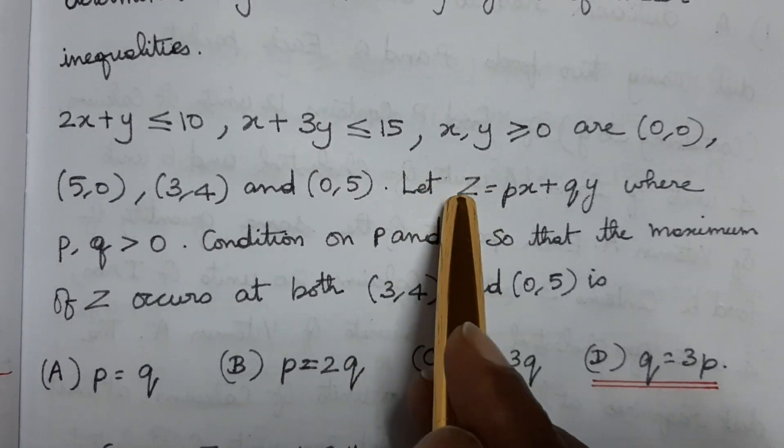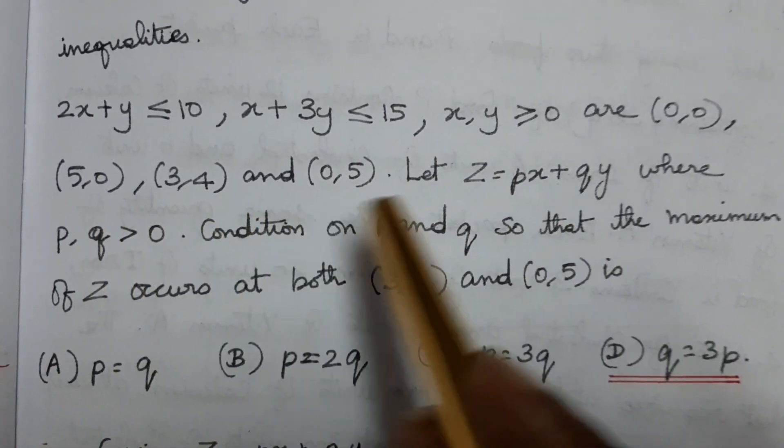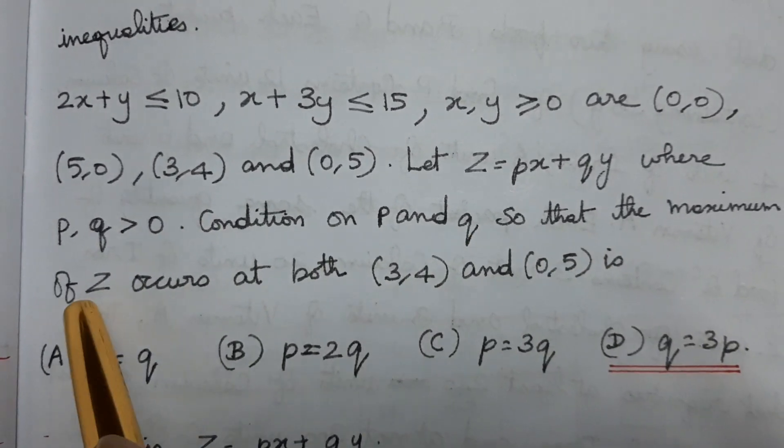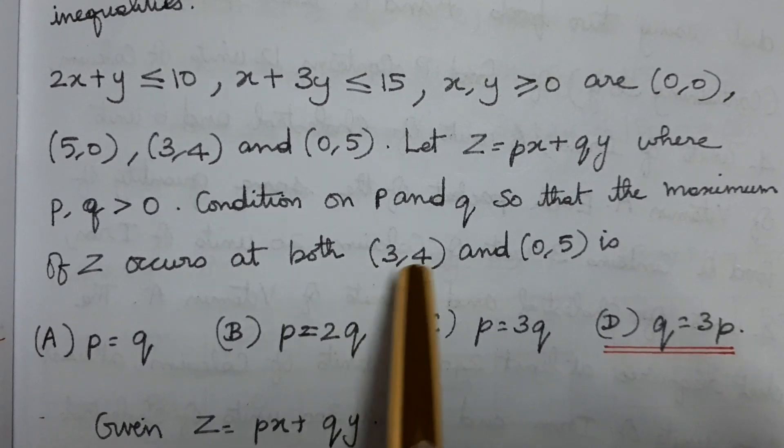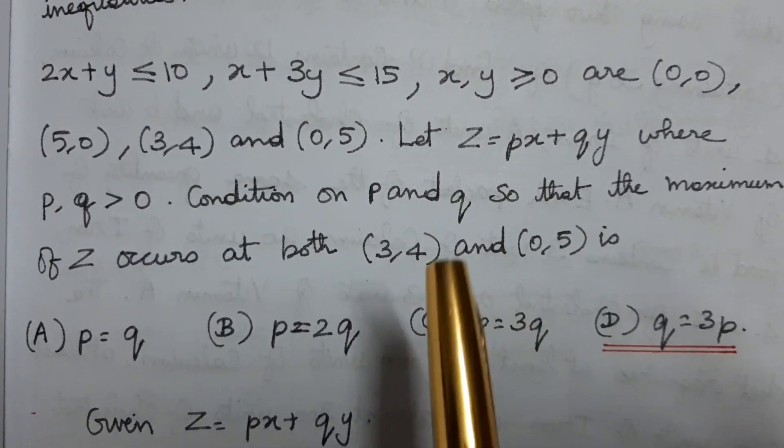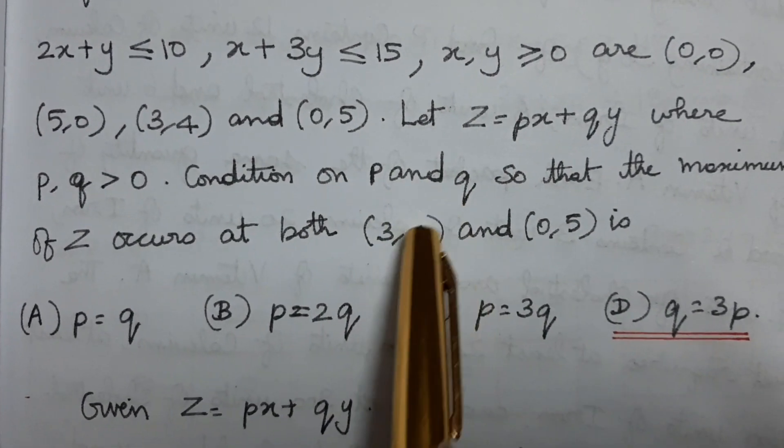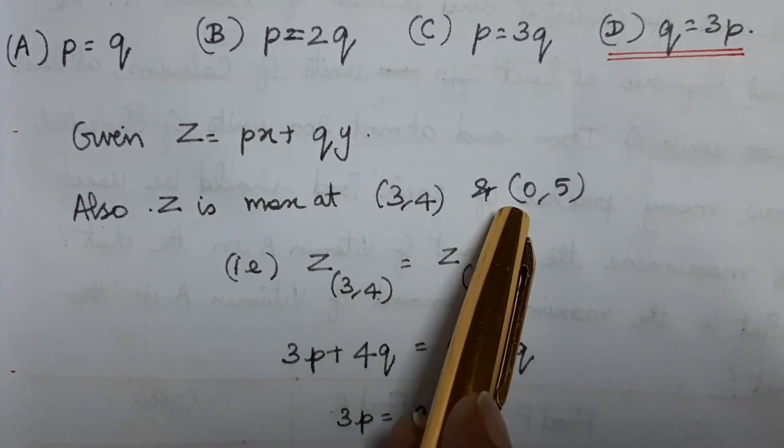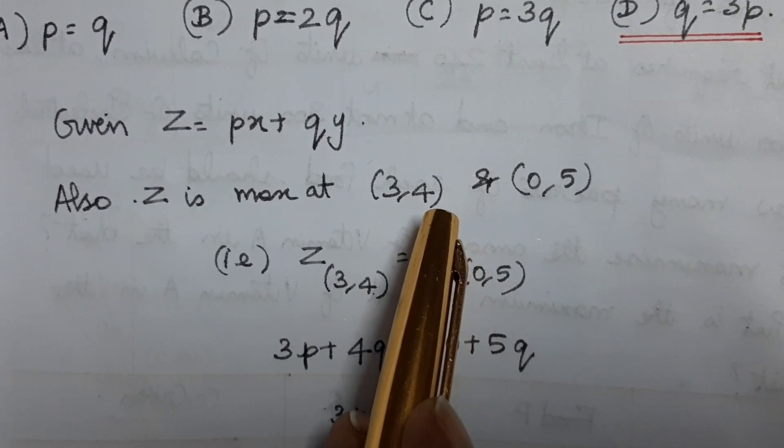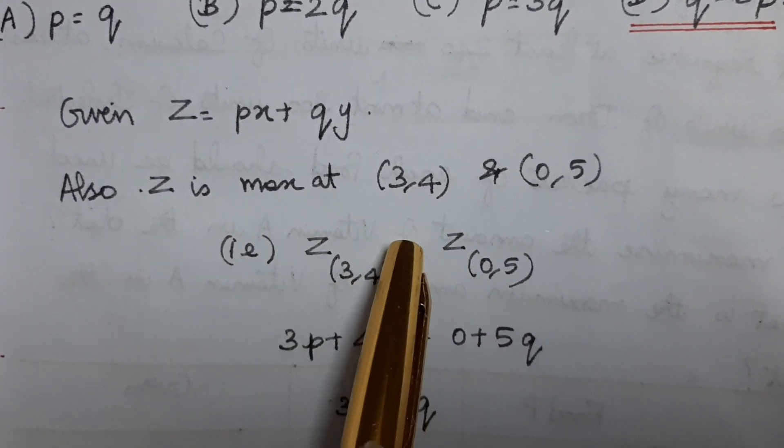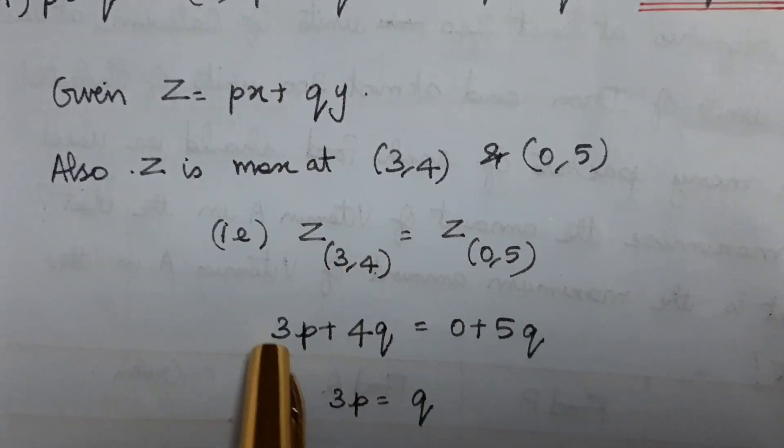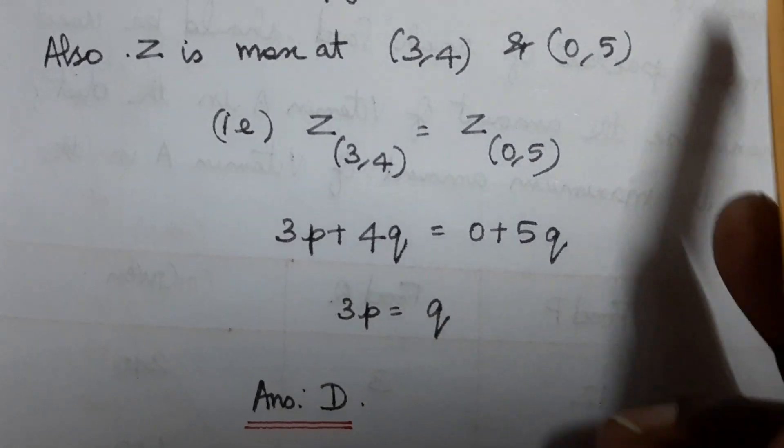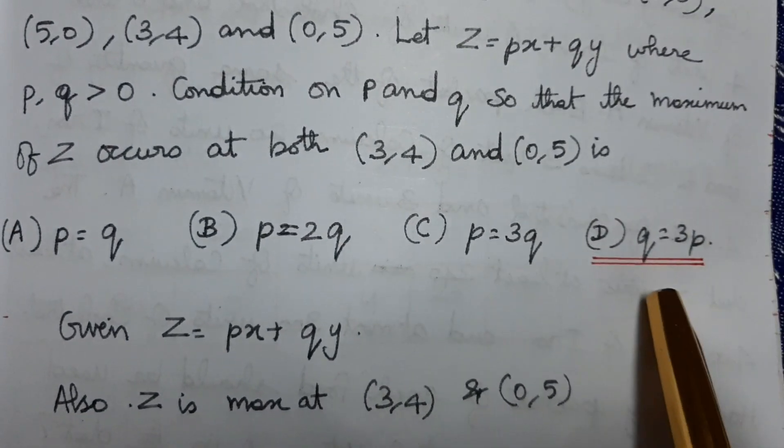Given the function Z equals Px plus Qy where P, Q greater than 0, maximum value occurs at both points 3, 4 and 0, 5. So 3P plus 4Q equals 0 plus 5Q. Therefore 3P equals Q. Q equals 3P is the answer. Thank you.